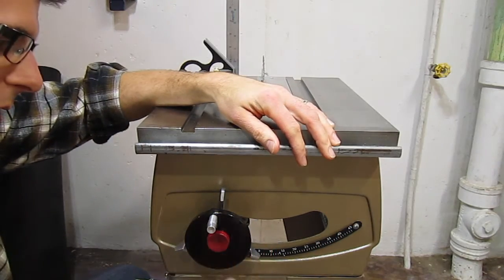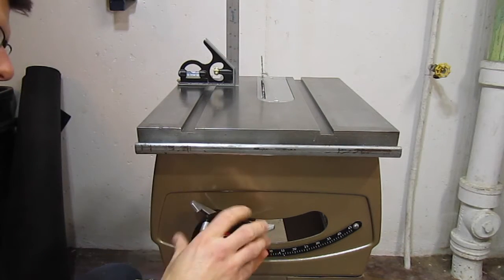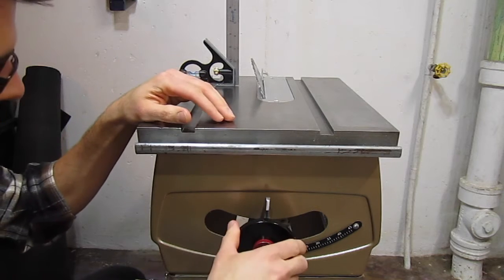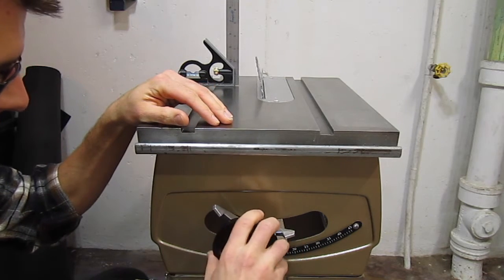To adjust the angle of the saw blade, we just twist this to release it and then we can turn this wheel to adjust the angle.